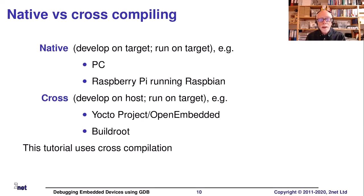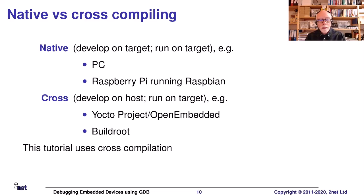There are two different ways of developing code for a system — native or cross. With native development, you develop on the target and run on the target; this is what you do on a PC or a Raspberry Pi running Raspbian. But it's not the most common way for embedded devices, because most embedded devices are not powerful enough to do compilation natively — it requires fast processors, lots of memory, and lots of storage. So it's much more common to do cross-development: we develop on a host system, typically running Linux, and we run on a target. I've used Yocto to create the cross-development environment.